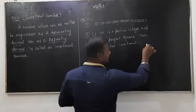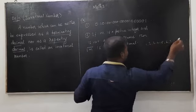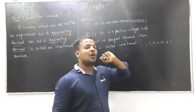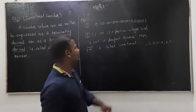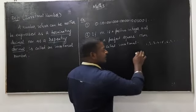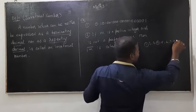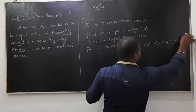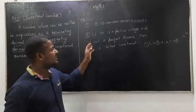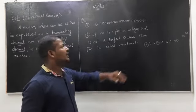If M is a positive integer and it is not a perfect square, then root over M is called an irrational number. The perfect squares are 1, 4, 9, 16, 25, 36 and so on. So if M is not a perfect square, then root over M is an irrational number.